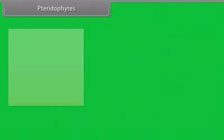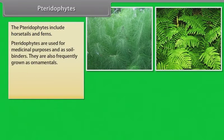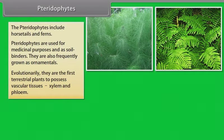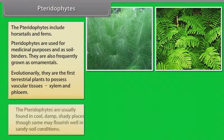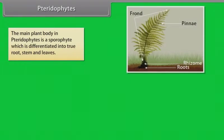Pteridophytes. The pteridophytes include horsetails and ferns. Pteridophytes are used for medicinal purposes and as soil binders. They are also frequently grown as ornamentals. Evolutionarily they are the first terrestrial plants to possess vascular tissues, xylem and phloem. The pteridophytes are usually found in cool, damp, shady places though some may flourish well in sandy soil conditions.